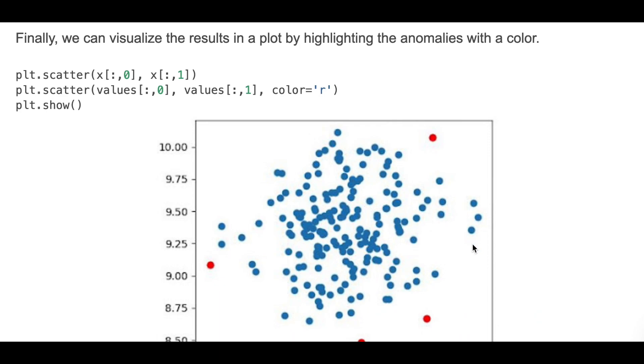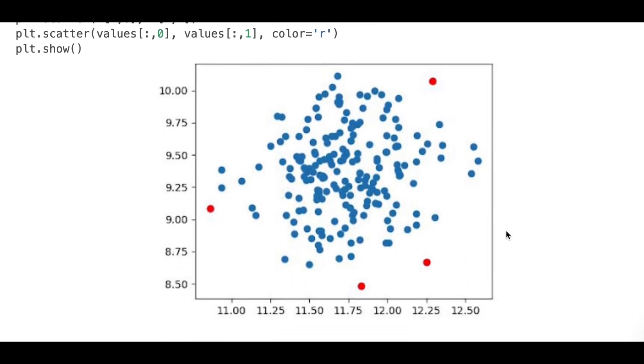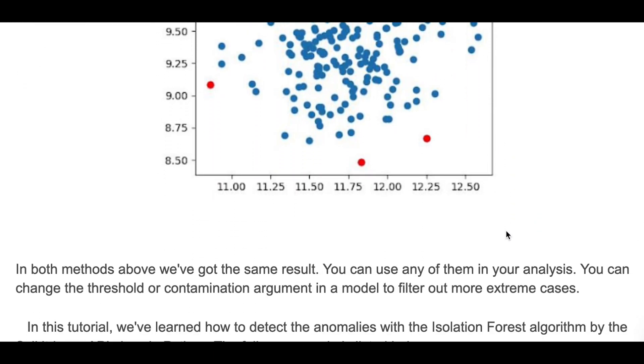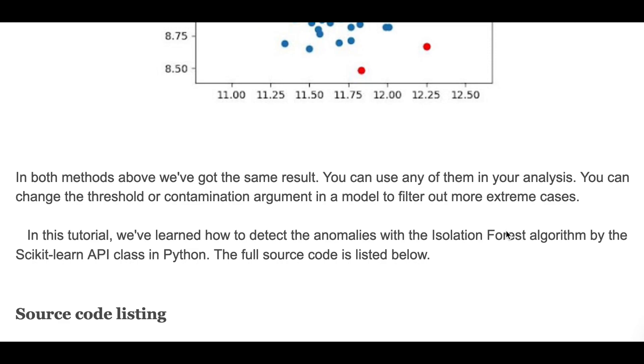As you have seen above, in both methods we've got the same result, so you can use any of them in your analysis. You can change the threshold or contamination arguments in the model to filter out more extreme cases. In this tutorial, we briefly learned how to detect anomalies with the Isolation Forest algorithm by using scikit-learn API class in Python.